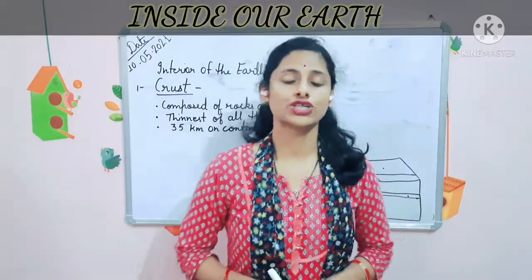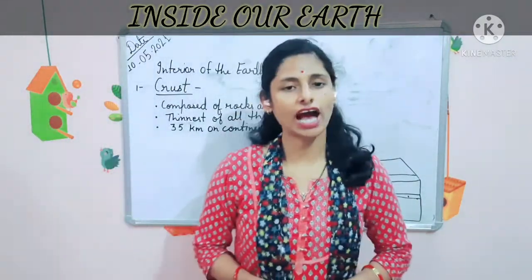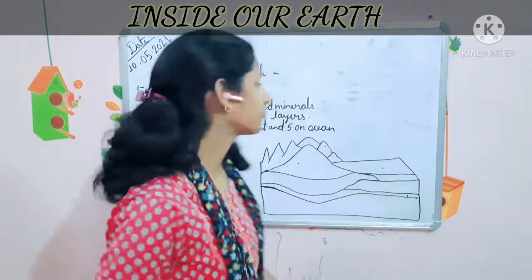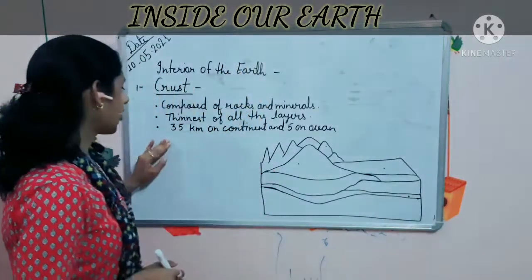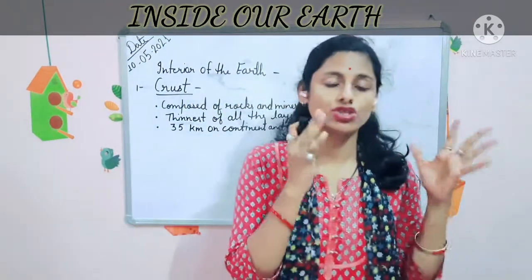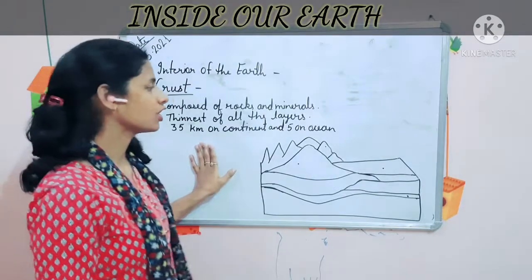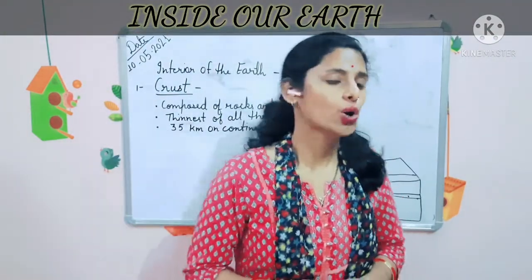The crust, or lithosphere, is the top hard layer of the Earth and it is composed of rocks and minerals. As we discussed in Chapter 1, the lithosphere is a source of minerals. It is also the thinnest of all the layers. The average thickness differs from continent to ocean — in continents, the average thickness is about 35 kilometers; in the ocean, it could be from 5 to 10 kilometers.